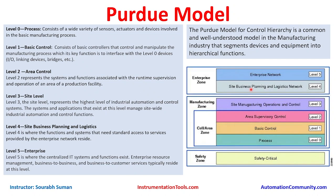Earlier, architectures were designed purely for convenience and ease of access. Now the requirements are changing — we need to design solutions based on cybersecurity needs, assess the organization's risk, and then design an architecture that is both cyber-secure and convenient. The intended audience matters: if an operator is destined to work on the operator workstation, it should not be convenient for IT people to access that system — only the operator or engineer should have access.